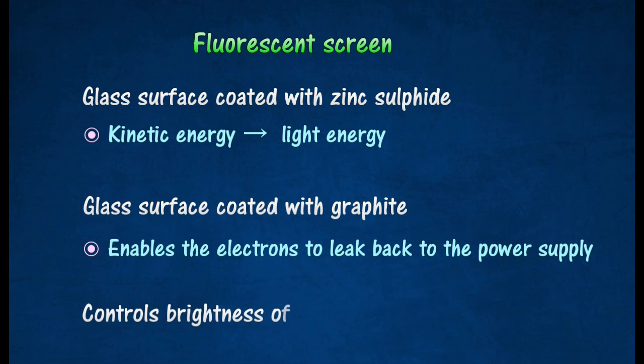The brightness of the light spot can be controlled by adjusting the grid voltage. A sharp focus on the screen can be obtained by altering the anode voltage.